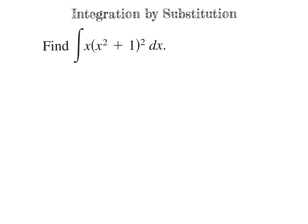In this next example, we are going to use a different process called u-substitution. We can still use pattern recognition of f of g of x and g prime, but u-substitution streamlines that process. We still want to identify what the inside function is — in this case it looks like x squared plus 1, being squared. We see that the inside function x squared plus 1 would have a derivative of 2x. We don't see a 2 here, but we do see an x — the important part.